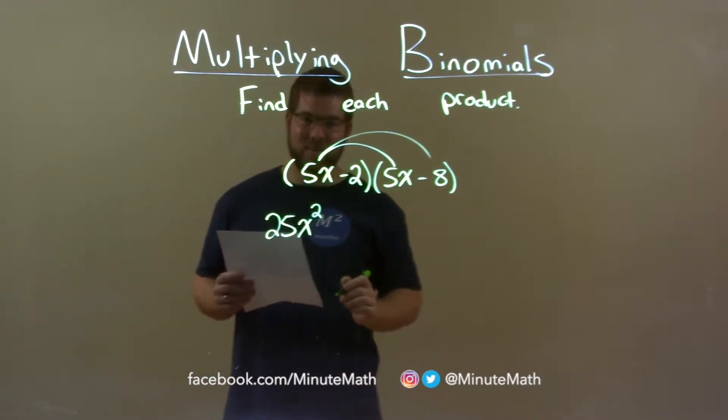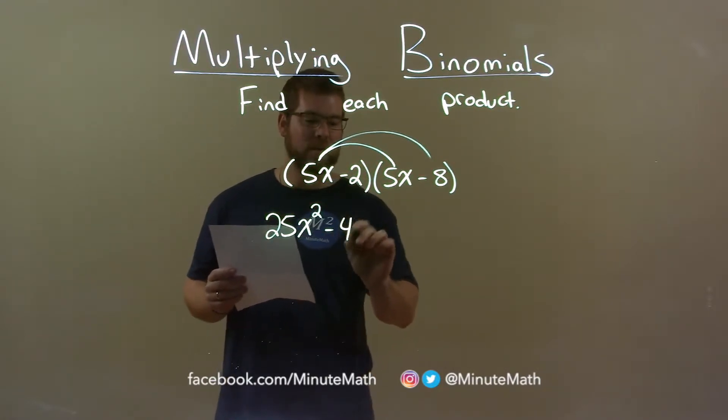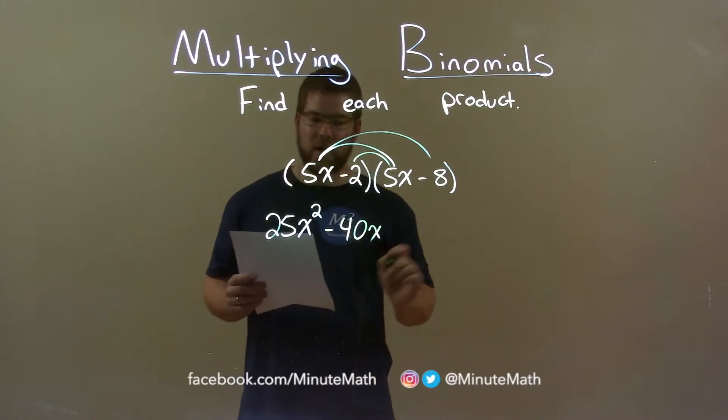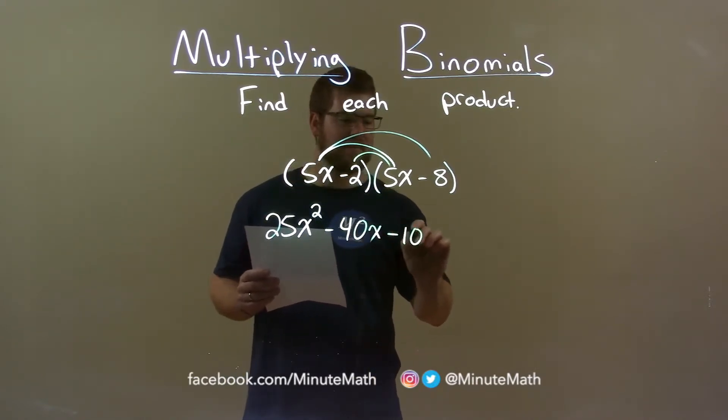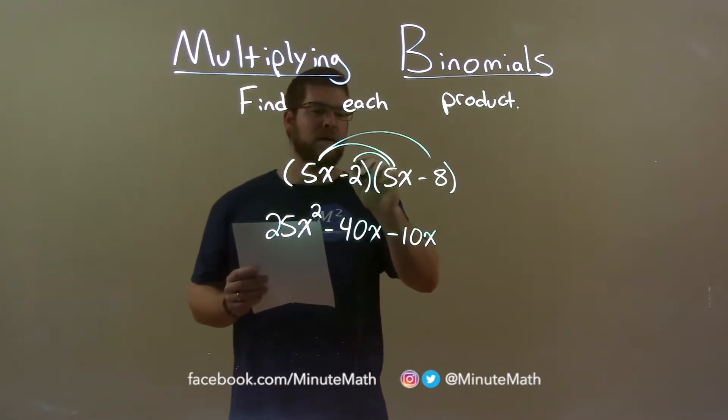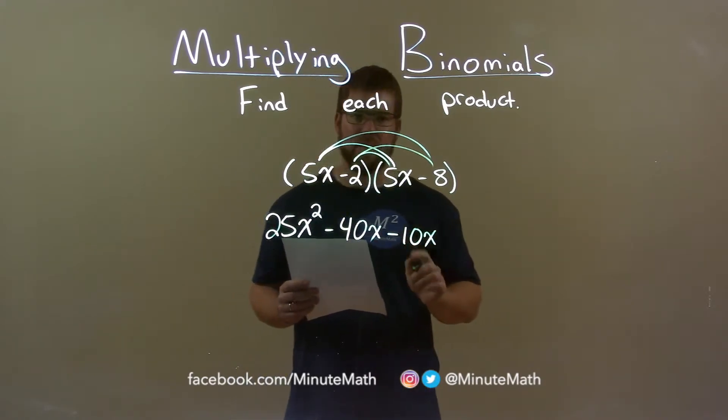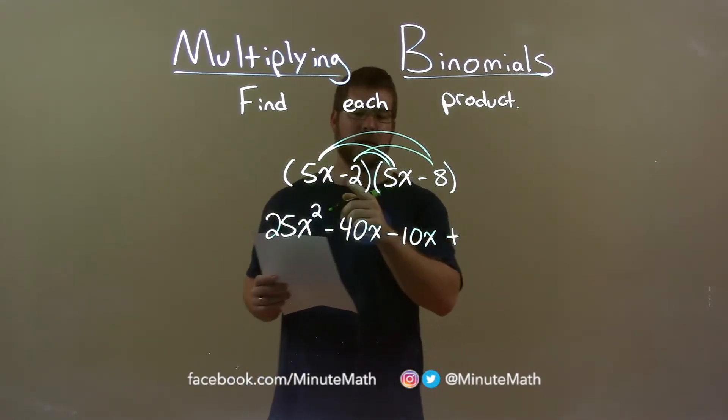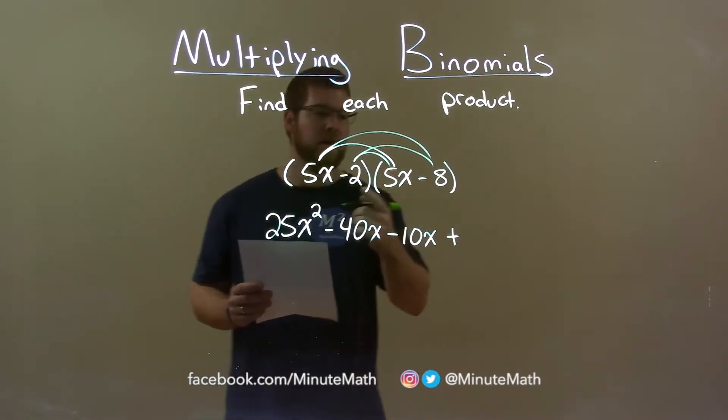5x times minus 8 is minus 40x. Minus 2 times 5x is minus 10x. And minus 2 times minus 8 is positive—right, negative times negative is positive—a positive 16.